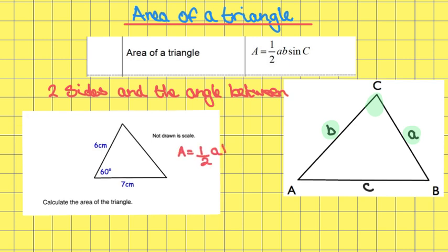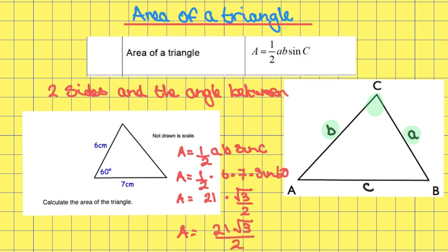We know that the area is equal to one-half ab sine C. So the area is one-half times six times seven times sine 60. That's one-half times six times seven, which is 21, times root three over two. So the area is 21 root three over two centimeters squared.